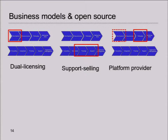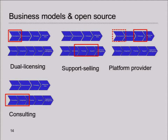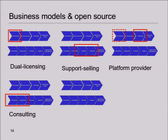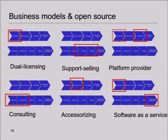And it helps if you are in control about the development also. Another model is consulting. Accessorizing — you have all the t-shirts of PhosphoG, that's accessorizing. And then at last you have software as a service. You can provide services using open source, and then it also helps if you have control about the development.